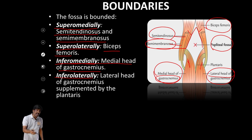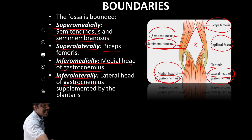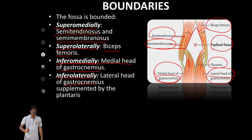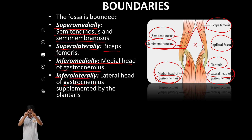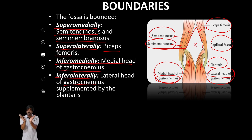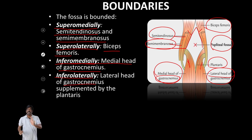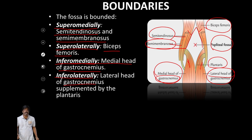Laterally, along with gastrocnemius, there is one more muscle called plantaris. So inferolaterally, the lateral head of gastrocnemius along with plantaris forms the inferolateral boundary. These four boundaries form the diamond-shaped popliteal fossa, present in the lower limb, posterior to the knee joint.